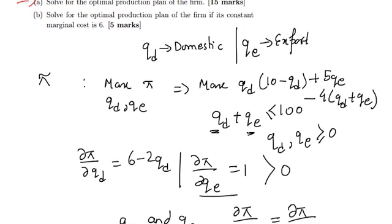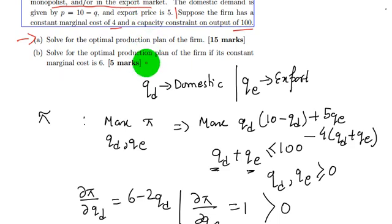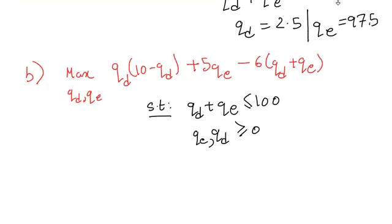Let us see the second part of this question. Now we have to obtain the optimal production plan of the firm if its marginal cost is 6.